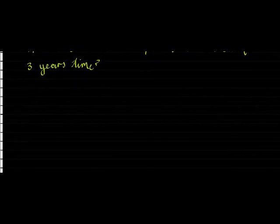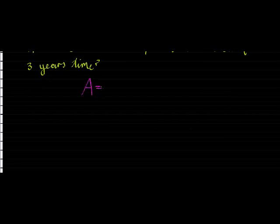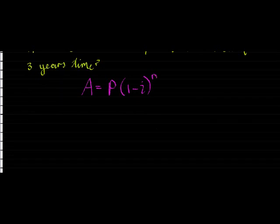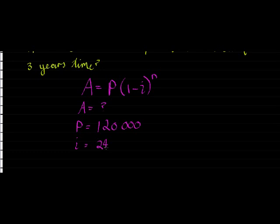So we learn it's the reducing balance method, which means we use our formula A = P(1 - i)^n. We use the formula to get the variables that we want. We don't know the future value of it. The principal value we know is 120,000. The depreciation rate is 24%, which means 0.24. And the time period or the number of times it is going to be reduced is 3 times.